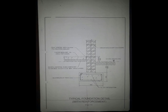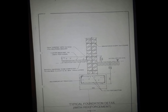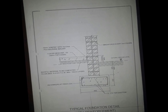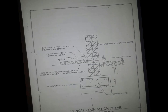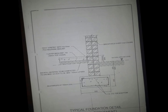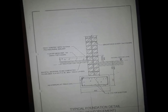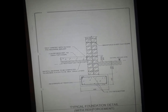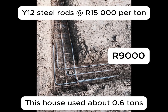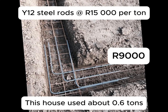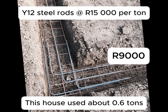Because we were building on unstable soil — classified H2 by the engineer — they had to design a special strip foot foundation reinforced with steel. As you can see in the picture, the steel required running Y12 rods in parallel: three at the top, three at the bottom, tied together by 8mm metal strips. The Y12 steel rods cost 15,000 rand per tonne, and this house required just over half a tonne, bringing the steel cost to 9,000 rand.